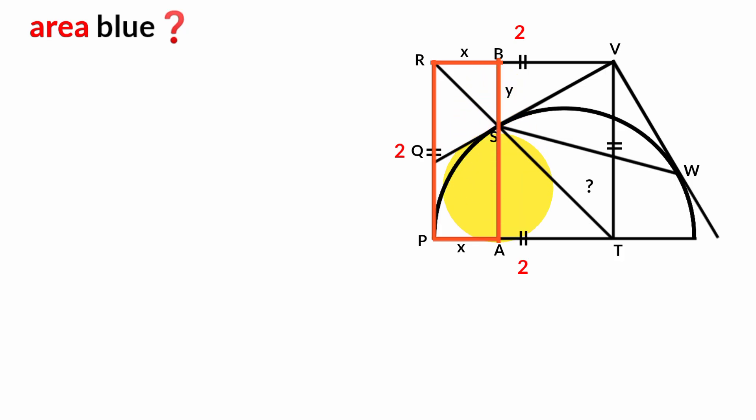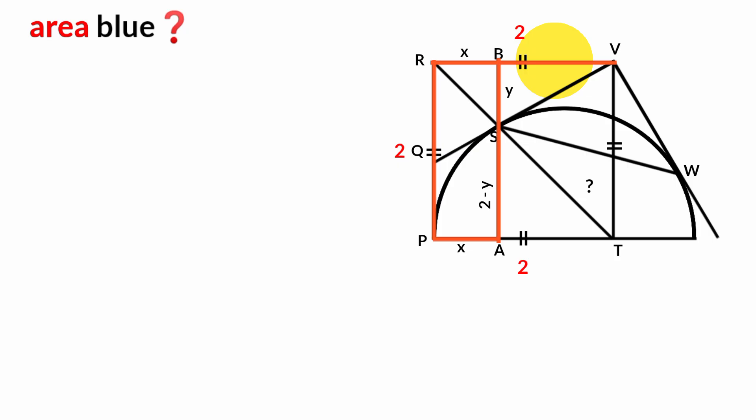From the rectangle, opposite sides are equal. Since this side has length 2, this side must also be 2. But we have this part to be y, therefore this must be 2 minus y. Since the length of line RV is 2 units and we have this part to be x, this side must be 2 minus x.